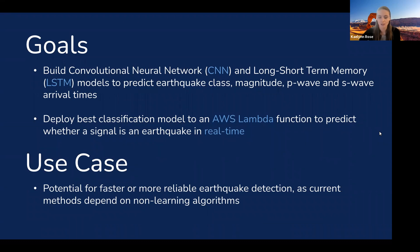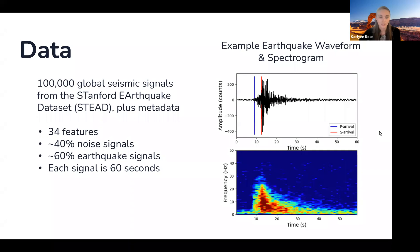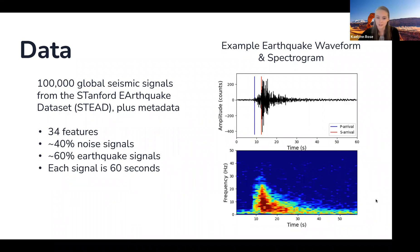The dataset I used was 100,000 global seismic signals from the Stanford Earthquake Dataset, plus metadata. There were 34 features, and about 40% of the signals were noise and about 60% were earthquake signals. Each signal was 60 seconds long. On the right here you can see an example earthquake waveform in black with the P-wave and S-wave arrivals marked, and the corresponding spectrogram, which shows the frequency of the signal versus time.